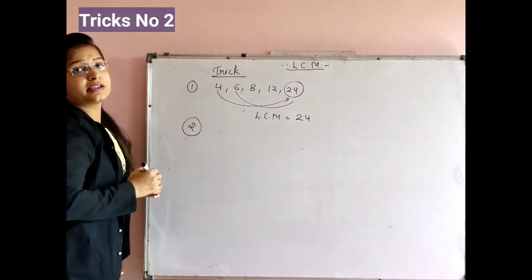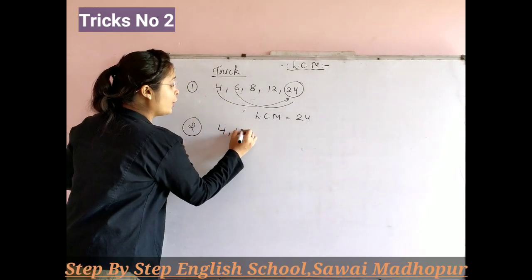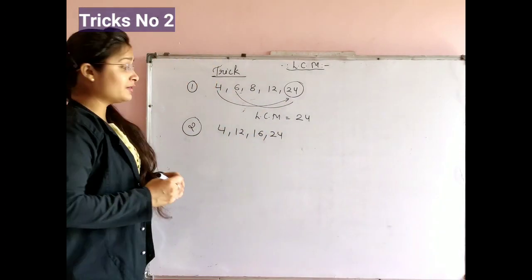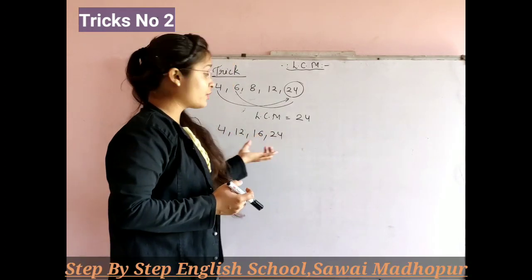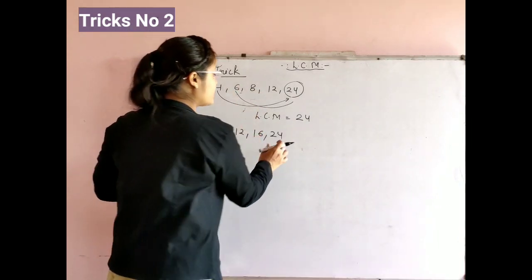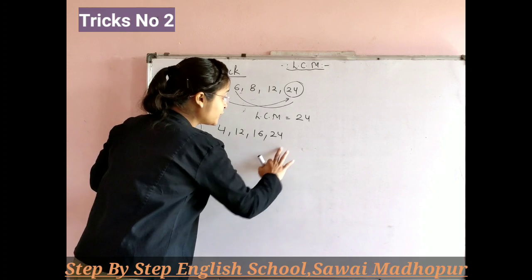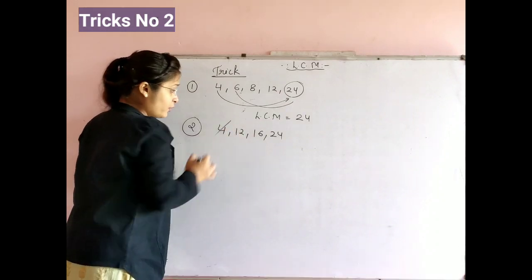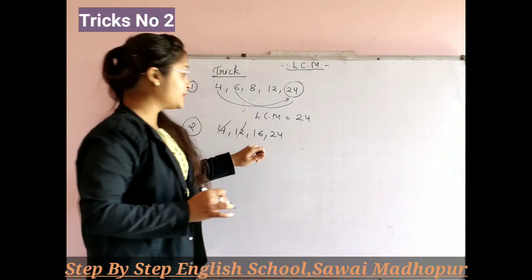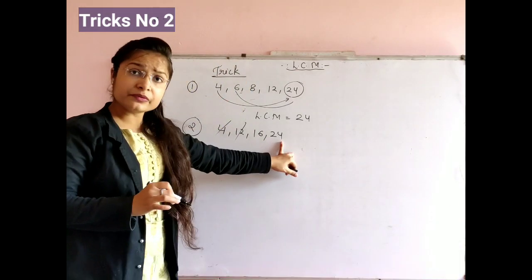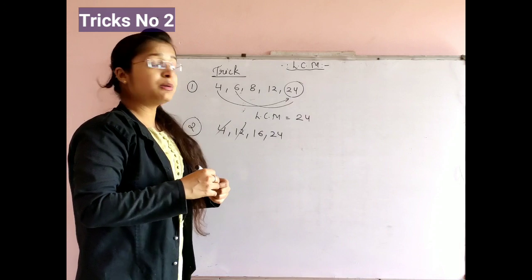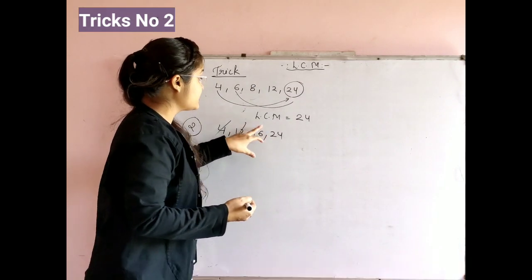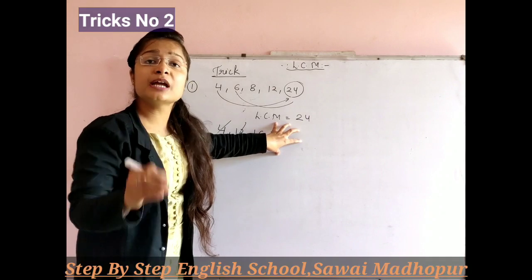Now what is our Trick Number 2? The question is 4, 12, 16, 24. Look at the largest number, which is 24. Is 4 divided by 24? Yes. Is 12 divided by 24? Yes, completely. But is 16 divided by 24? No, you cannot do it completely. Because 16 does not divide 24 evenly, 24 is not our answer. So we cannot say the LCM is 24 here.